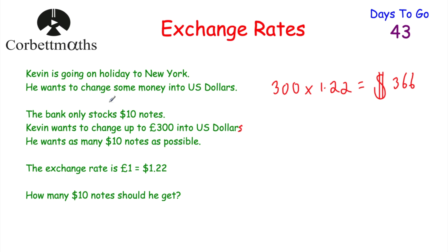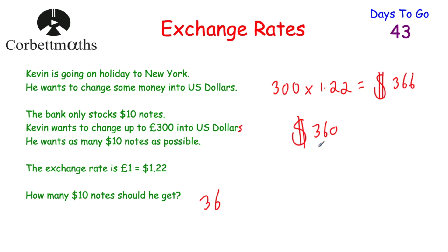First, let's consider how much Kevin could get if the bank could change any amount. £300 multiplied by 1.22 equals $366. But the bank only stocks $10 notes, so the total must be a multiple of 10. He can't get $366 because they have nothing lower than a $10 note. So the maximum he could get is $360, meaning he should get 36 $10 notes.